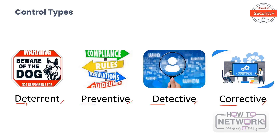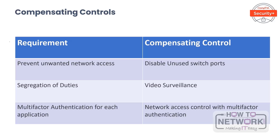The last type is corrective. Corrective controls are reactive and provide measures to reduce harmful effects or restore a system that has been affected. Examples of corrective controls include operating system upgrades, data backup restoration, vulnerability mitigation, and anti-malware.